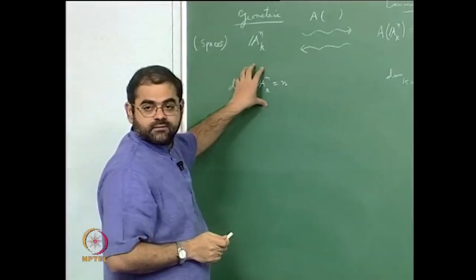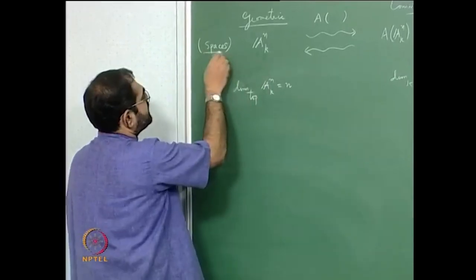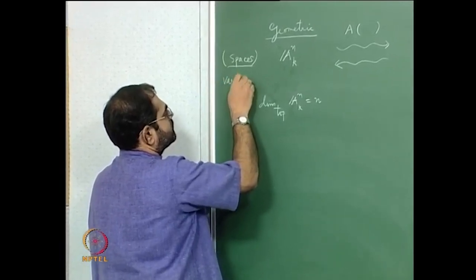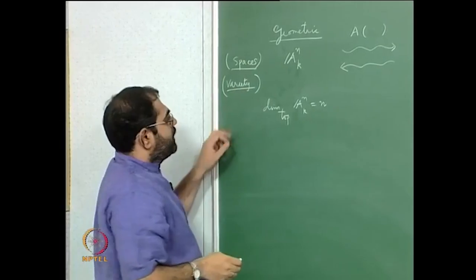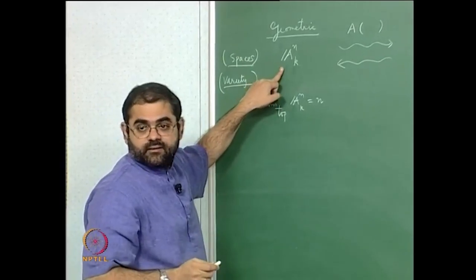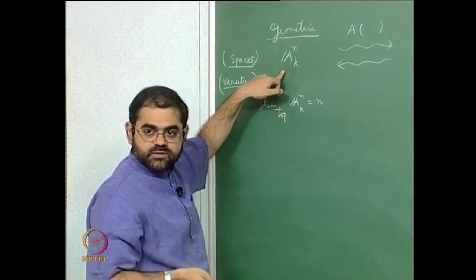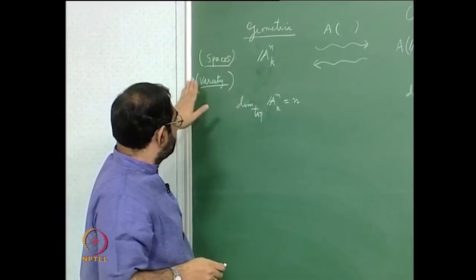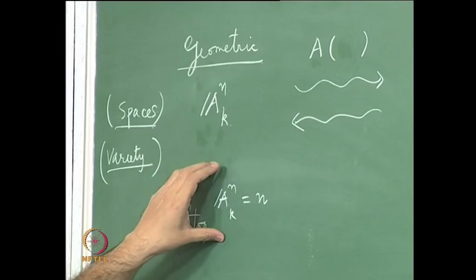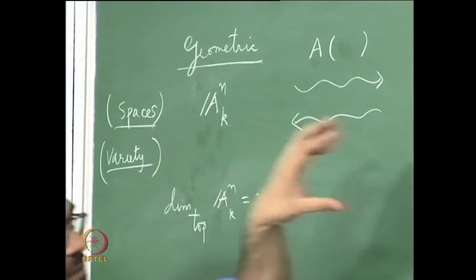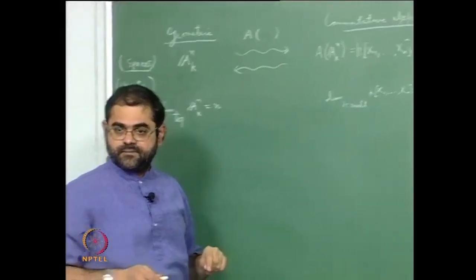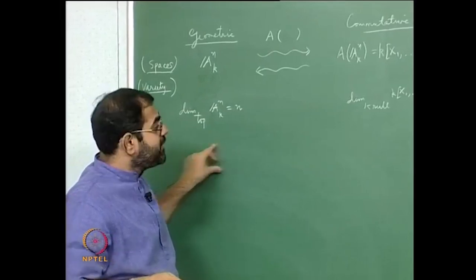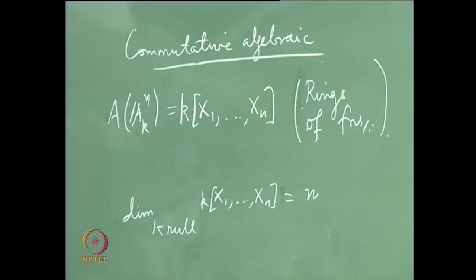The topological dimension of a variety — and by variety I mean an irreducible closed subset of A^n, in particular A^n itself is an irreducible closed subset of itself — so this is the biggest possible variety. If you take any variety, you can associate to it its ring of functions, and the dimension of the variety will be the same as the Krull dimension of its ring of functions.